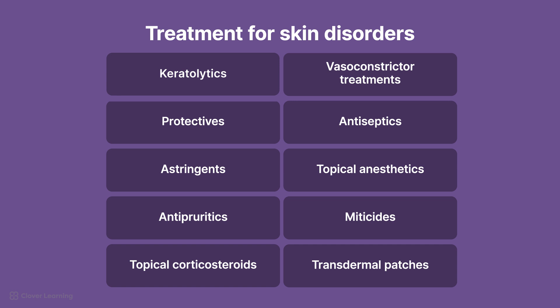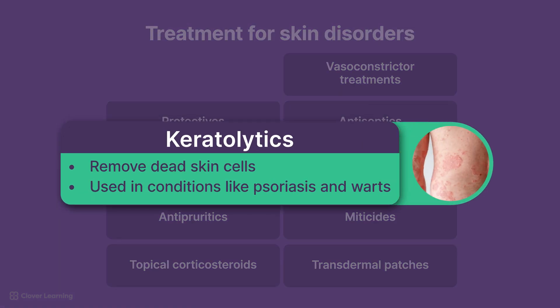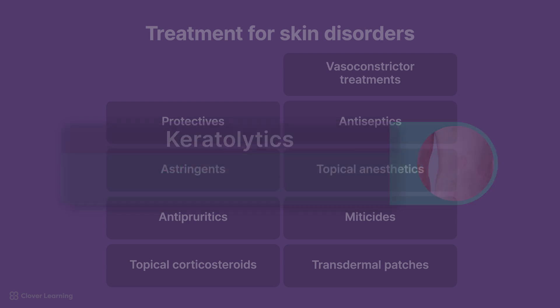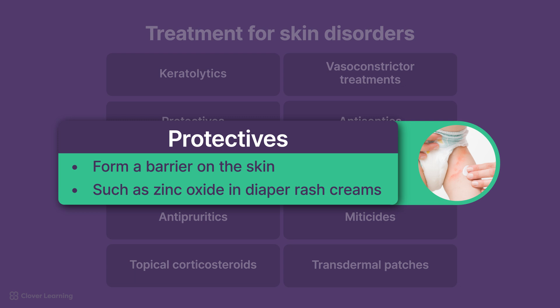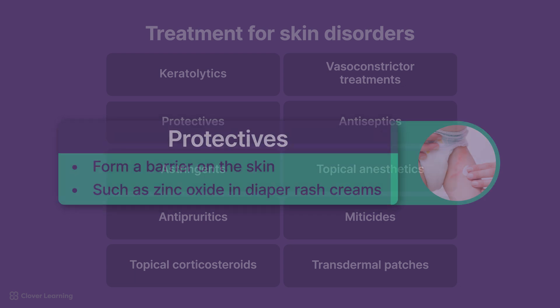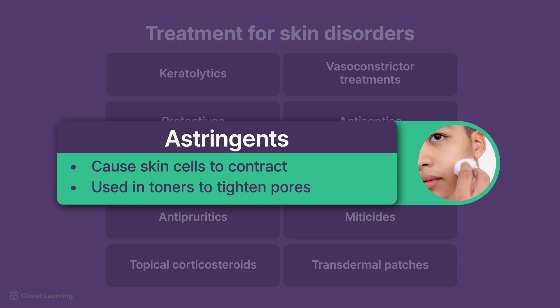Part of effective treatment are 10 groups of medication used for these and other disorders. Keratolytics remove dead skin cells, used in conditions like psoriasis and warts. Protectives form a barrier on the skin, like zinc oxide and diaper rash creams. Astringents cause skin cells to contract, used in toners to tighten pores.